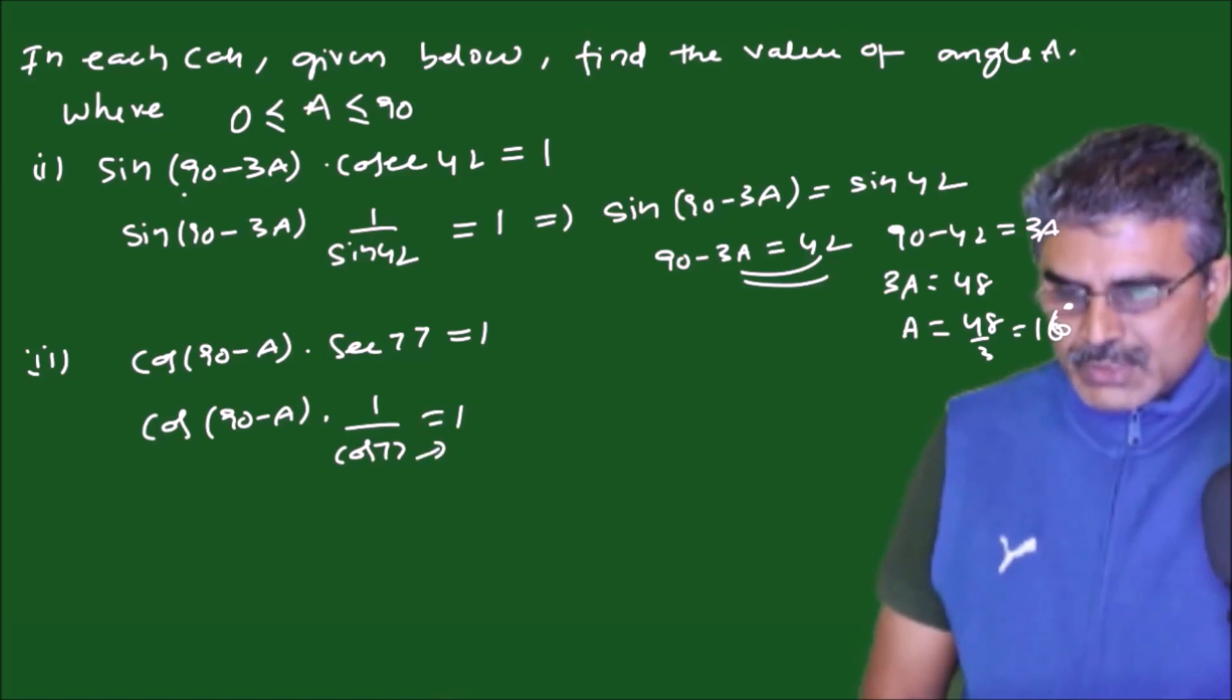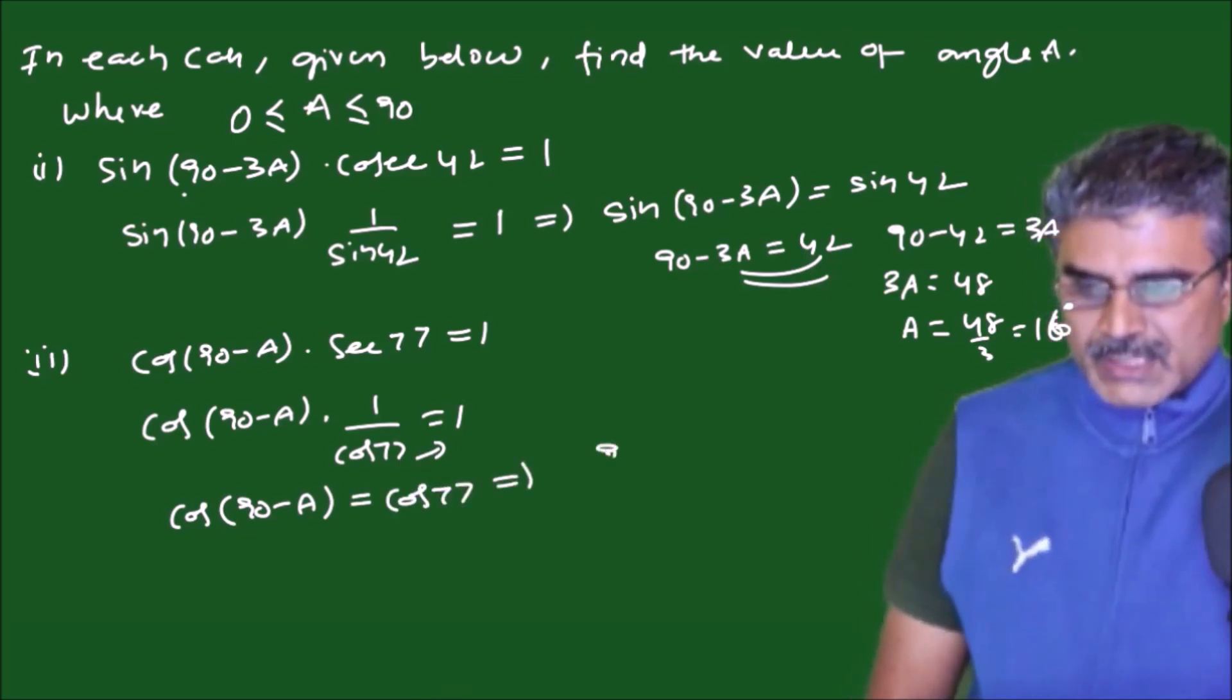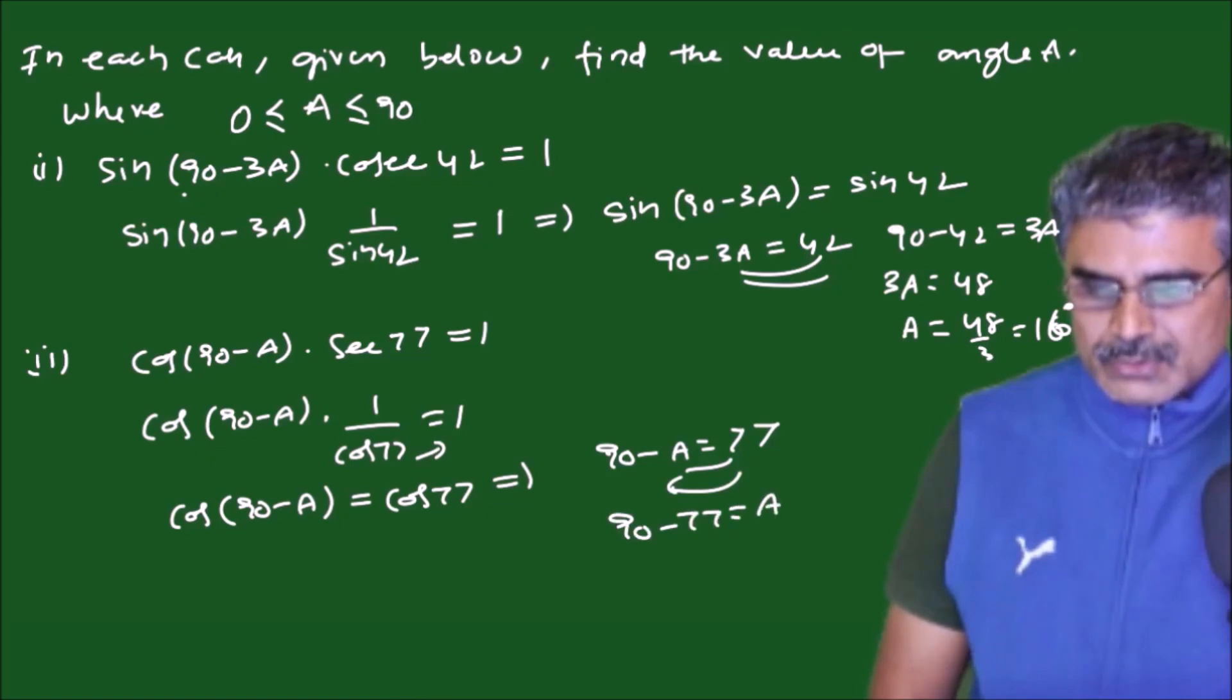Bring this cos 77 to right hand side. So you will have cos(90 minus A) is equal to cos 77. From this if you compare the angles, 90 minus A is equal to 77 and if you swap these positions you will have 90 minus 77 is equal to A.